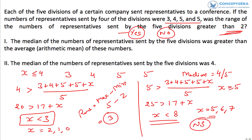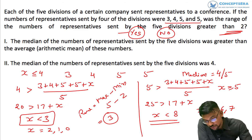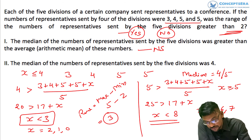Since we're getting both range = 2 and range > 2, the result depends on whether the median is 4 or 5, and we're not sure. So the first statement is not sufficient to answer the question.